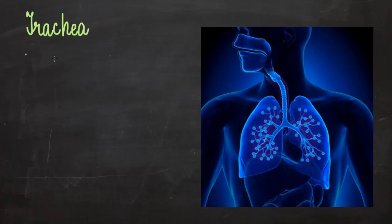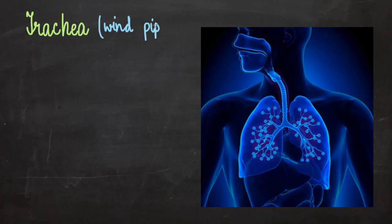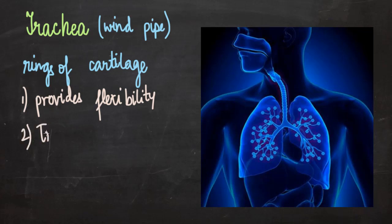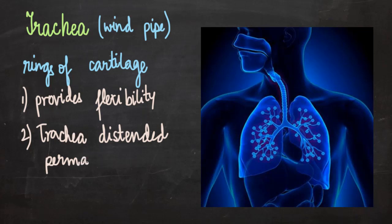The next part of the air passage is the trachea, or windpipe. From the larynx, air goes into the trachea, which has rings of cartilage around it. Breathing is a continuous process, so it is very important that the trachea remains distended all the time. These rings of cartilage provide flexibility to the windpipe and also keep it permanently distended so it does not collapse.